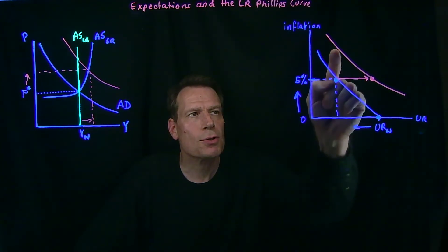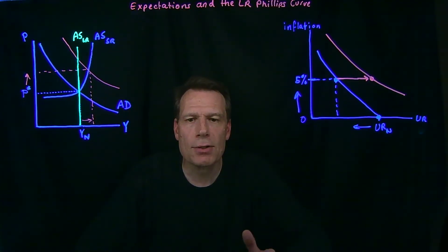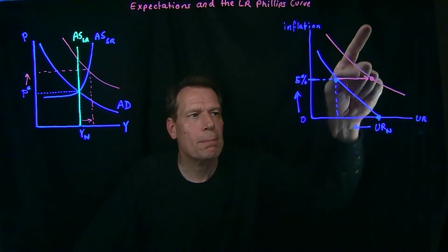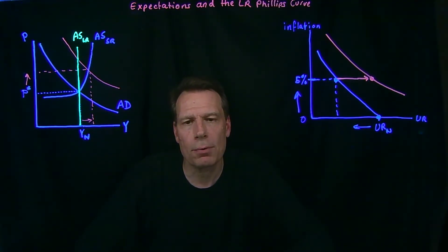The government could pump the economy again and reduce the unemployment rate again, but at the cost of higher inflation. As expectations catch up with that higher inflation rate, workers would then decide to cut back and get back to the original level of unemployment.